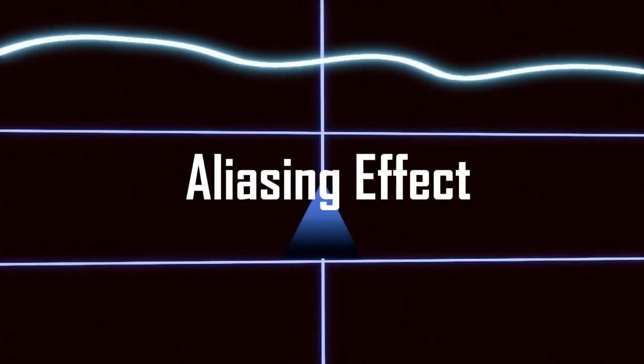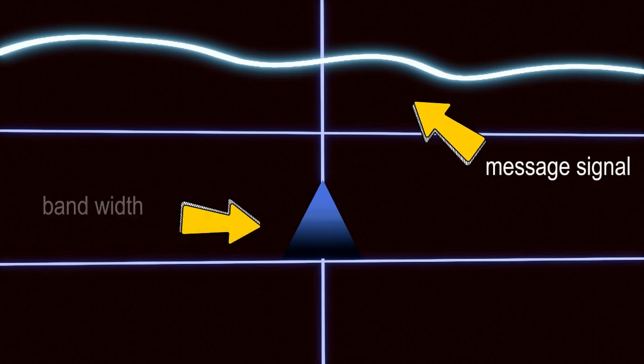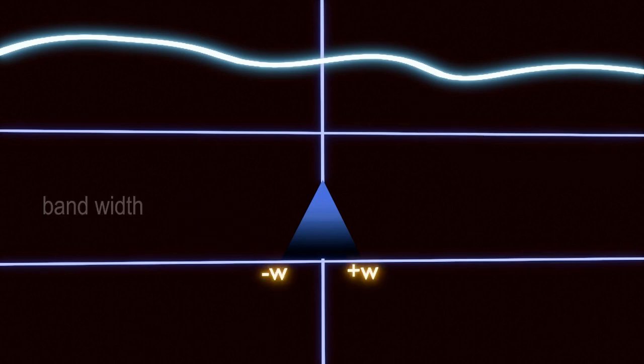Aliasing Effect. Suppose this is a message signal with corresponding bandwidth. The bandwidth is spread from minus W to plus W for this message.